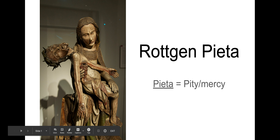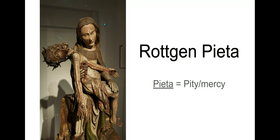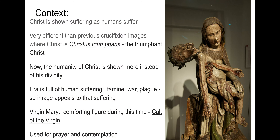You're looking at one of the most emotionally powerful images that we see all year, and it's called the Rottgen Pieta. Pieta translates to pity or mercy — that is Latin for those two terms. That is definitely a vocab term you want to put into your context for this piece. Here we have an image from Germany, made of wood, and it is an incredible image of Christ being taken off the cross.